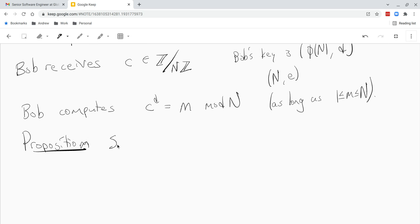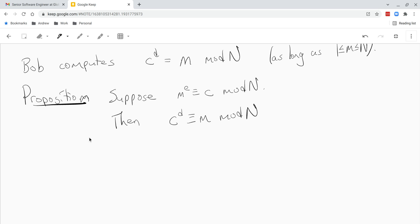Okay. So suppose m to the e is congruent to c mod n. Then c to the d is congruent to m mod n. And let's prove this.